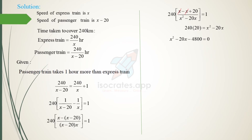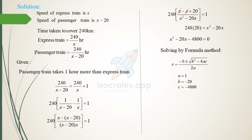This quadratic equation is solved by the formula method. The quadratic formula is: x equals minus b plus or minus square root of (b squared minus 4ac), all divided by 2a. The coefficient of x squared is 1, so a equals 1. The coefficient of x is minus 20, so b equals minus 20. The constant term is minus 4800, so c equals minus 4800.